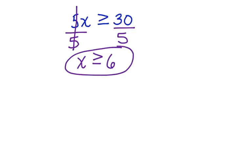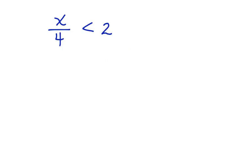Now let's look at a simple one using division: x divided by 4 is less than 2. We want to figure out what values, when we substitute in for x, will make this a true statement. There's division in the inequality, so we're going to use the inverse, which is multiplication. We're going to multiply both sides by 4.